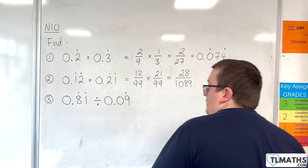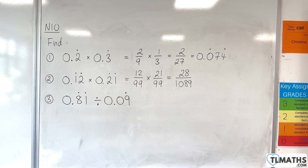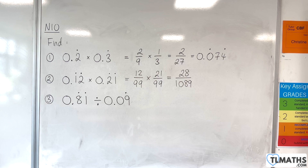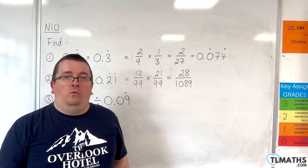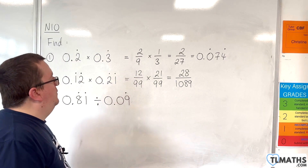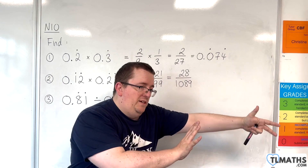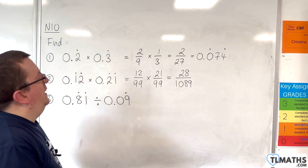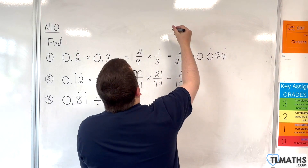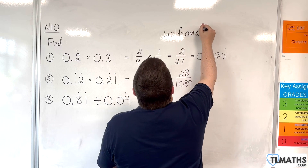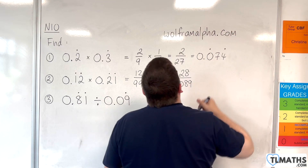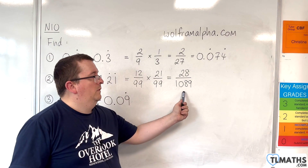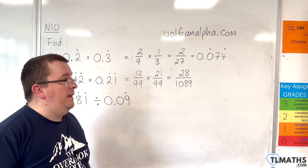On the calculator, 28 over 1089 gives 0.02571166208... and I can't see any repetition there. Checking on Wolfram Alpha at wolframalpha.com, it confirms it is a repeating decimal, but it has a period of 22 — meaning 22 digits repeat after the decimal point. The calculator just can't show enough decimal places on its display to reveal the pattern.